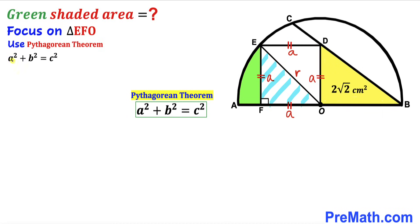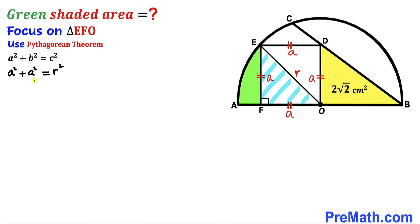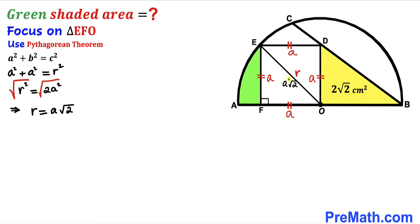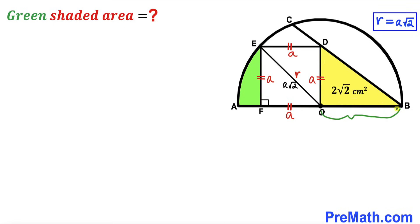Filling in the Pythagorean formula: a² + a² = r², which simplifies to r² = 2a². Taking the square root of both sides gives r = a√2. So the radius of the semicircle is a√2. We also note that OB is a radius of the same semicircle, so OB = a√2 cm as well.